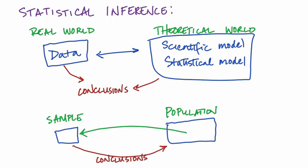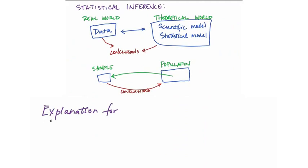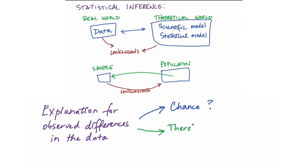Here's how we look at it. If we observe something in our real world data, could it just be due to chance? Or is it telling us something stronger about our theoretical world, perhaps contradicting an assumption that we've made about it?